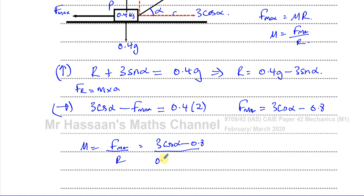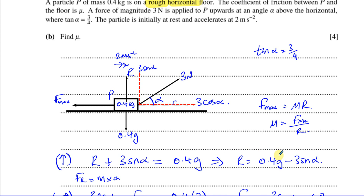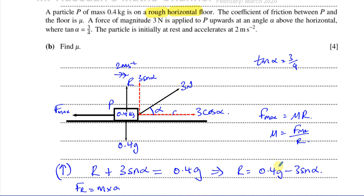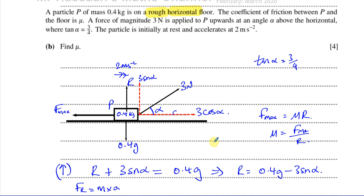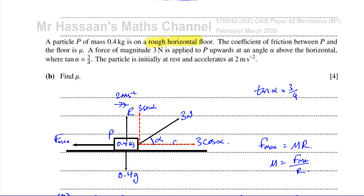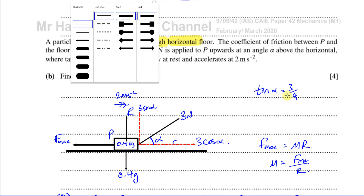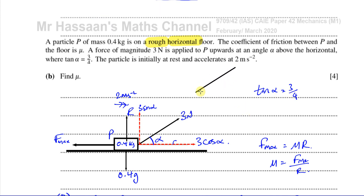Now we need to deal with the alpha. Many people would find the angle alpha first using inverse tan of three quarters, write down a decimal value, and then use sine and cosine of that decimal — and their answer will most likely not come out as an exact answer. Sometimes questions ask us to give the answer in exact form, and then we lose marks. So even though some students resist this approach, we need to know how to use the given ratio directly. If they give you a ratio for tan, sine, or cosine of an angle, we can use that to find the other ratios easily.